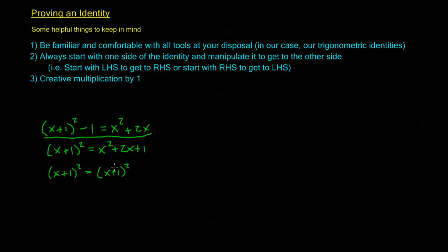This is the most common mistake when trying to prove these identities. If you just start with it at the beginning, really anything else you do after that is just extra work and you haven't shown anything. What you've shown is that x plus 1 squared equals x plus 1 squared, with the assumption that x plus 1 squared minus 1 was already equal to x squared plus 2x.